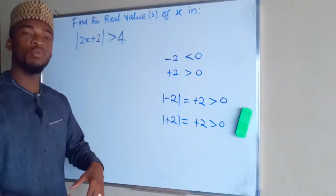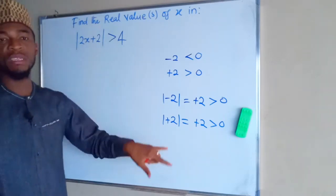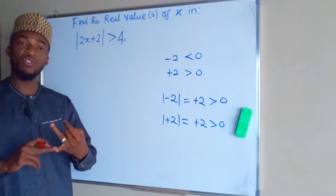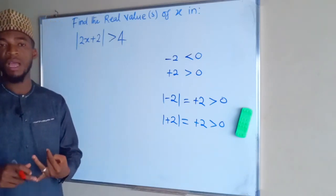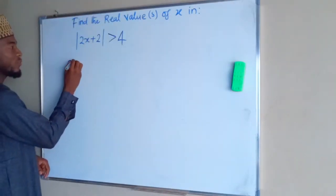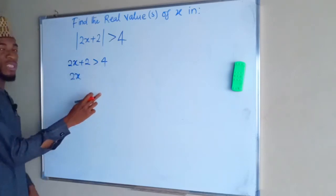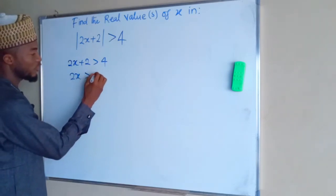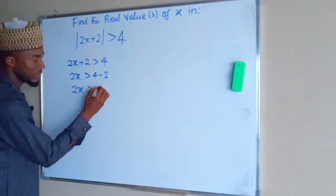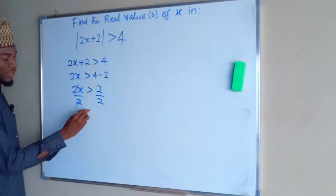The expression on the left hand side — we don't know whether it is negative or positive, but the absolute value is going to make it positive. So we treat it in two forms. First, we assume it is a positive number: we have 2x plus 2 greater than 4. Solving for x: 2x is greater than 4 minus 2, so 2x is greater than 2. Dividing both sides by 2 gives x greater than 1.